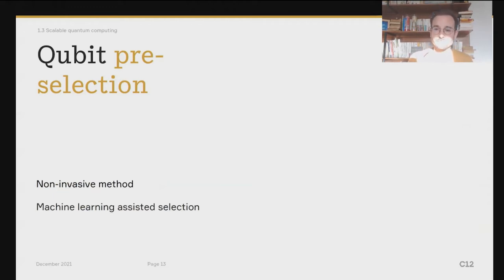So then qubit pre-selection. Any individual quantum system faces variability. And you have to solve this challenge if you want to build a large-scale quantum computer. Any quantum computer will be faced with this issue. And with this nano-assembly process combined with non-invasive machine learning assisted methods, it's a unique way to pre-select qubits at large scale.